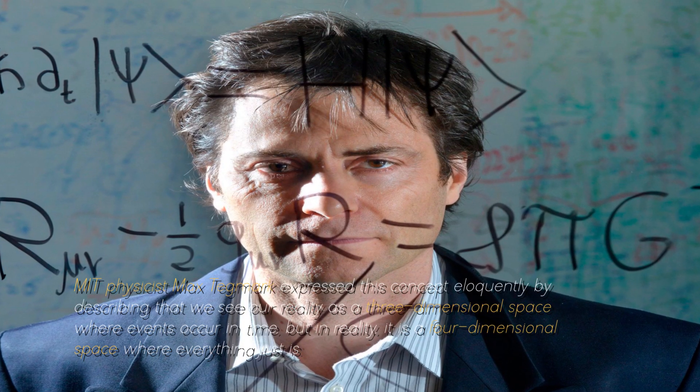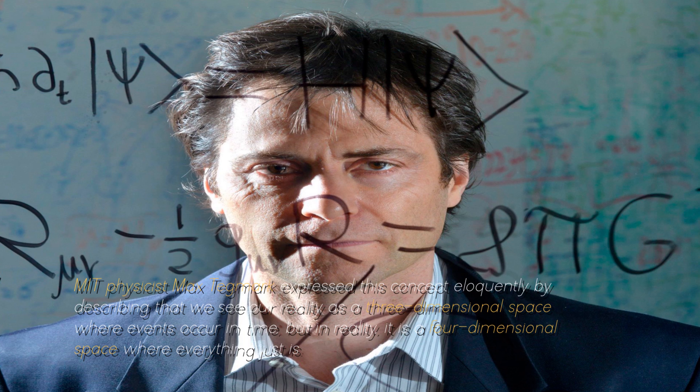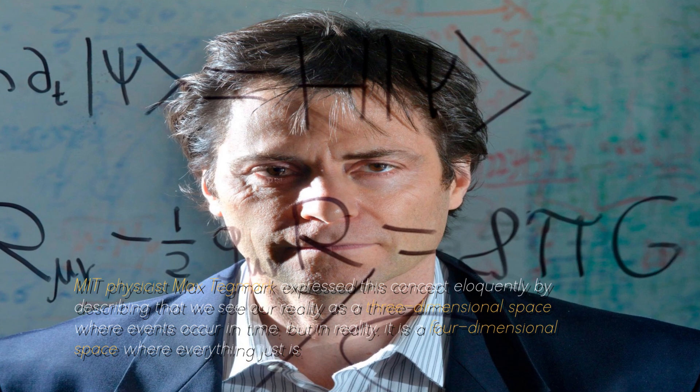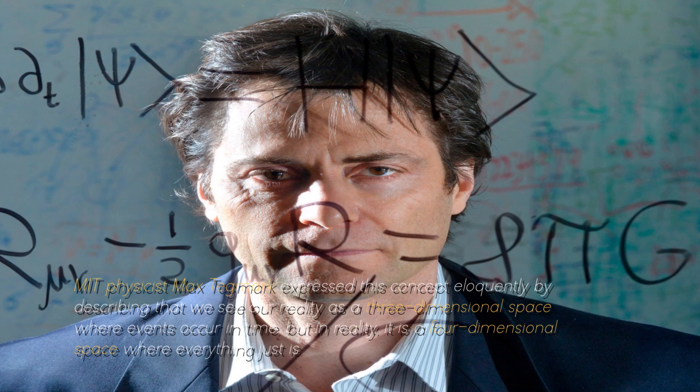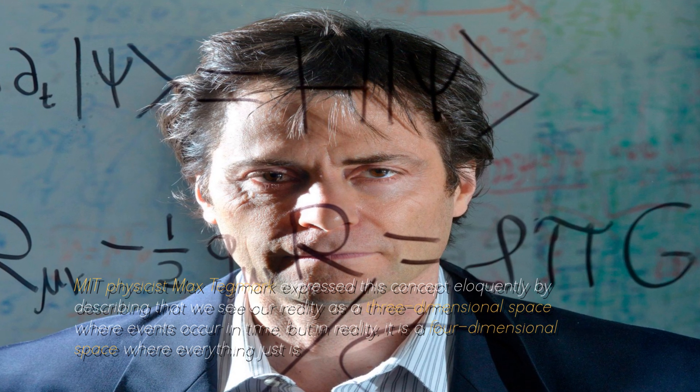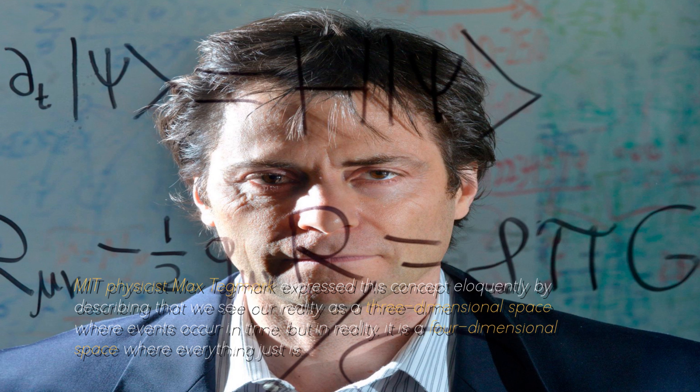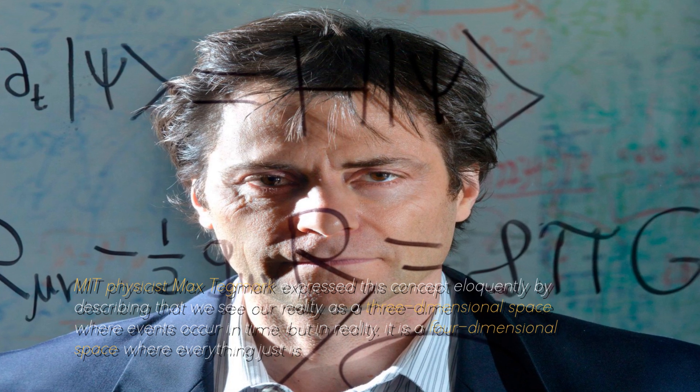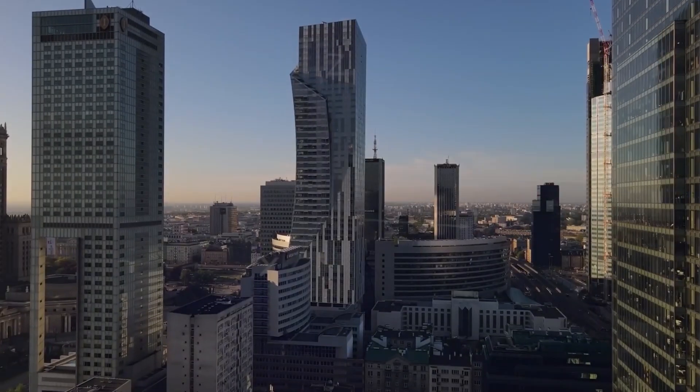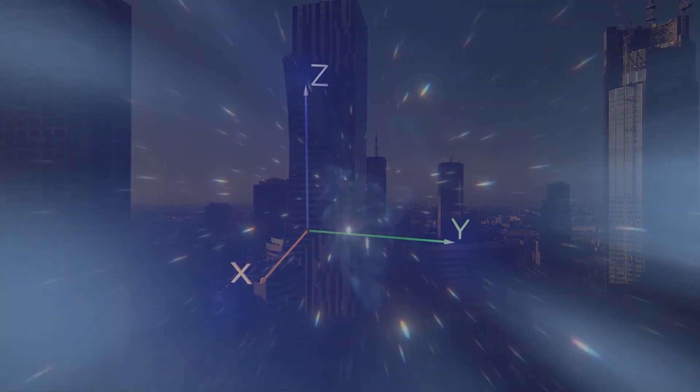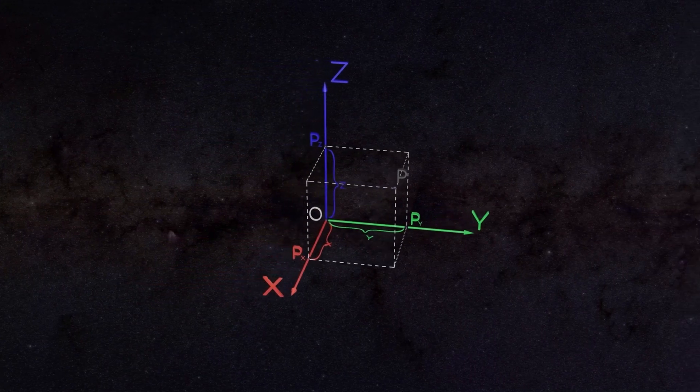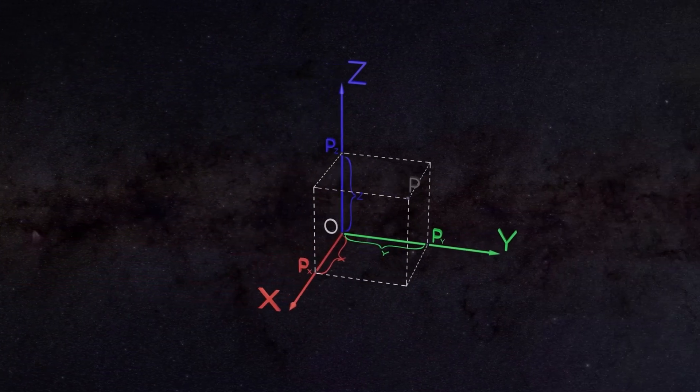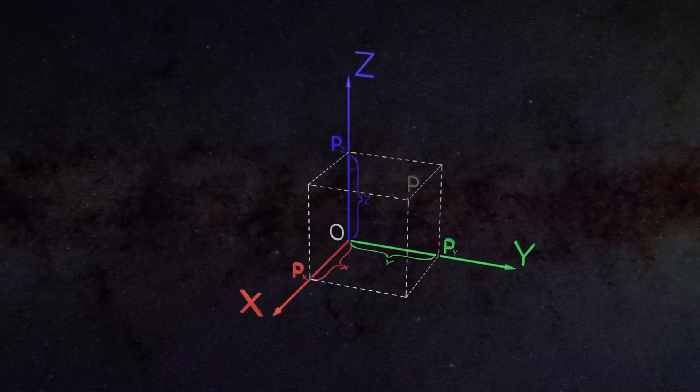MIT physicist Max Tegmark expressed this concept eloquently by describing that we see our reality as a three-dimensional space where events occur in time, but in reality it is a four-dimensional space where everything just is. If this approach were true, then time would be revealed as an illusion, since nothing would undergo real change. Past, present, and future would coexist constantly.